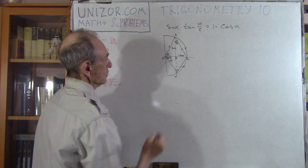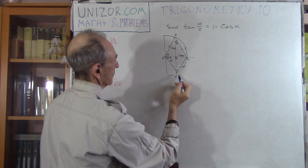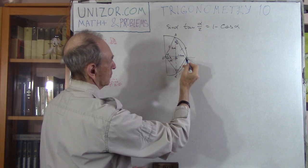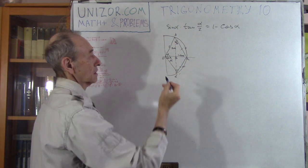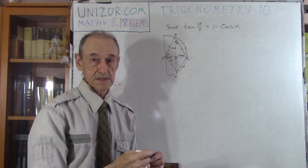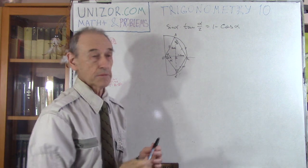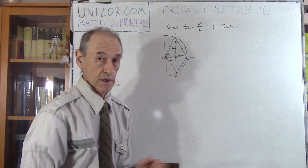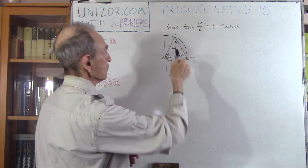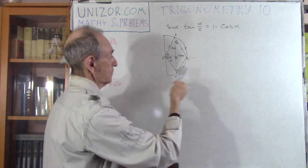Angle alpha is a central angle supported by an arc of the same size. So angle COD, which is alpha, is the central angle supported by arc CB. And angle CAD is an inscribed angle supported by exactly the same arc. We know that an inscribed angle is always half of the central angle when they're supported by the same arc. That would prove that this angle is alpha over 2 — half of alpha. Everything else was already proven.